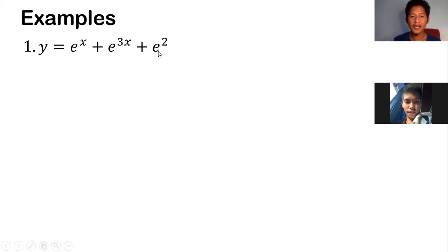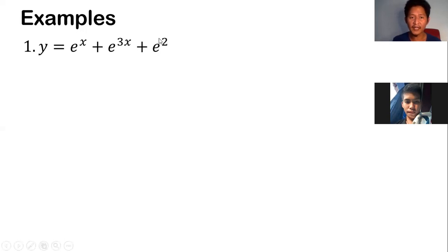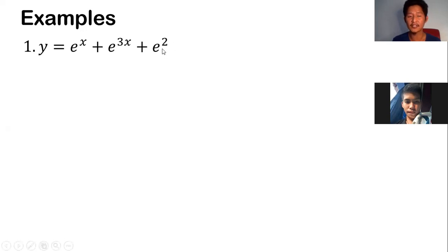The third term is also an exponential function, but the exponent is a constant. So e squared — if you have a constant raised to a constant, this is just a constant. You can still use rule number 8: copy e squared, then times the derivative of the constant. The derivative of a constant is 0.